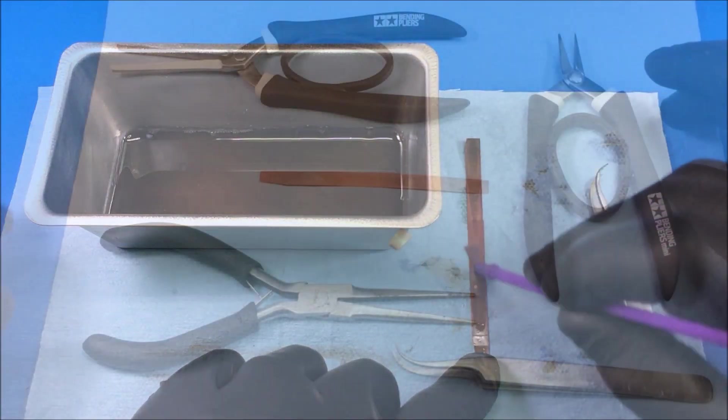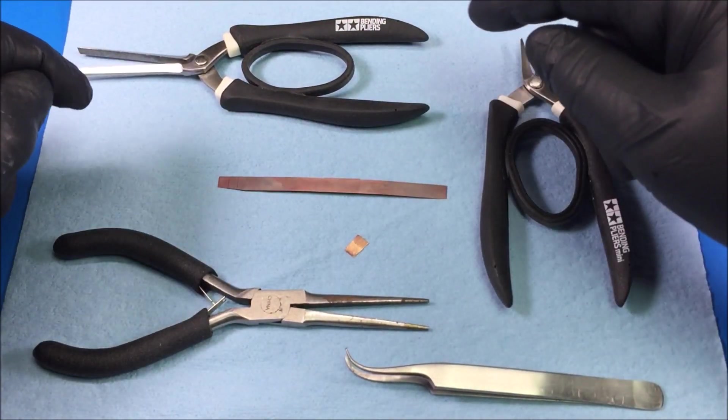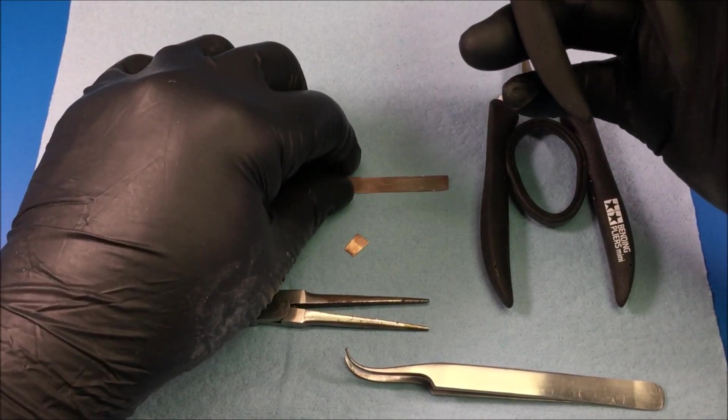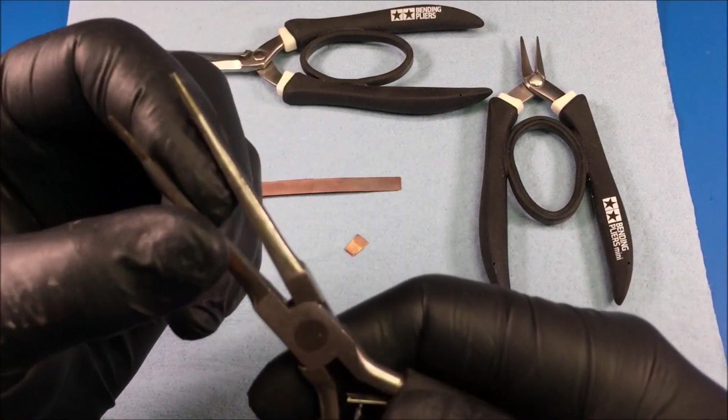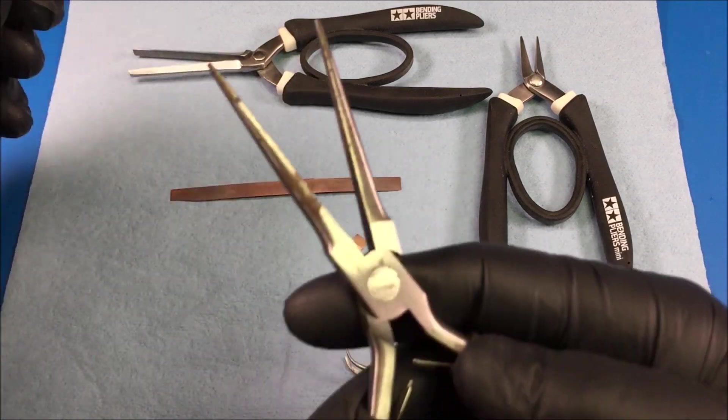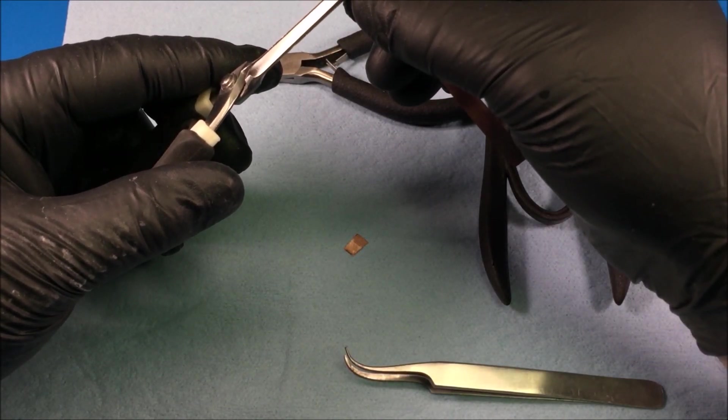The other thing I wanted to show you was bending your photo etch with these particular tools here instead of using a fancy brake like I showed you earlier. You can just get yourself a pair of needle nose smooth pliers - don't get the ones that have grip on them because they could damage the photo etch.